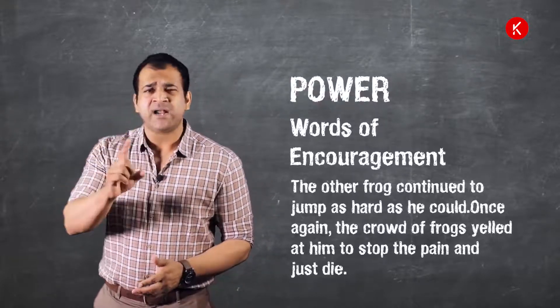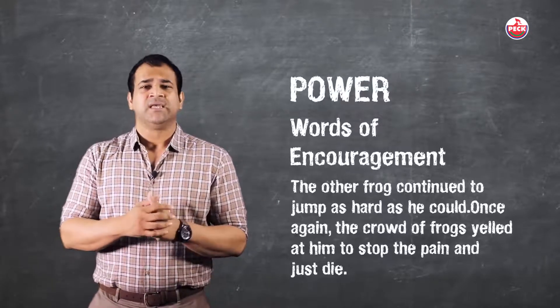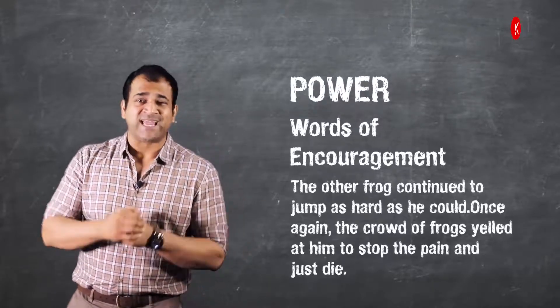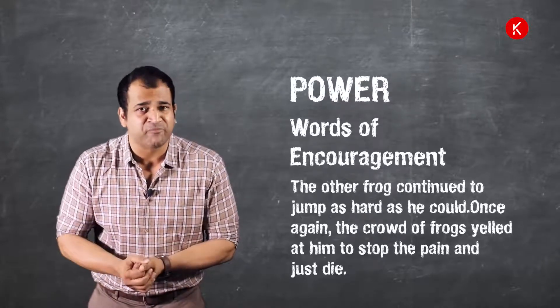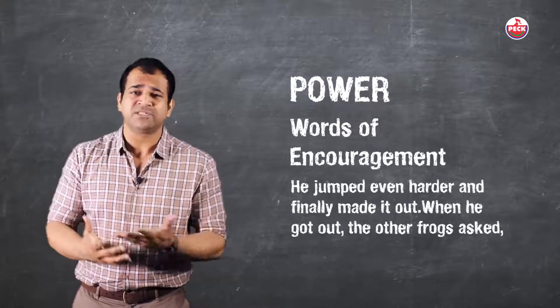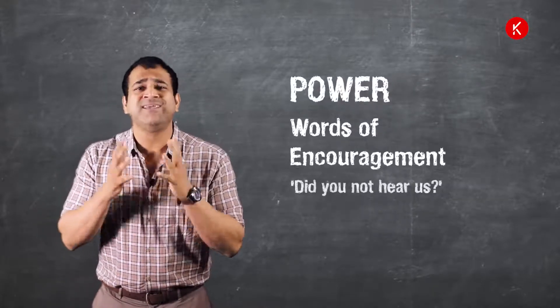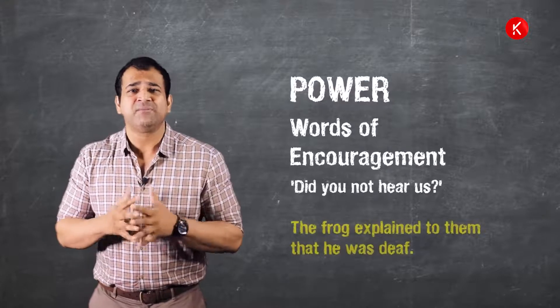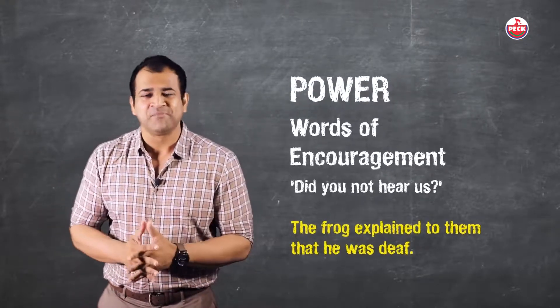The other frog continued to jump as hard as he could. Once again, the crowd of frogs, the army of frogs to be precise, yelled at him to stop and just die because it's causing a lot of pain. He jumped even harder and made it out somehow. When he got out, the other frogs asked, did you not hear us? The frog explained to them that he was deaf. He thought they were encouraging him the entire time.